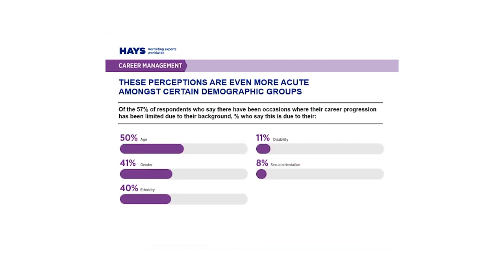57% of respondents who believe that their progression has been limited due to their background cited the following specific characteristics: 50% believe this was due to their age, 41% due to their gender, 40% their ethnicity, 11% their disability, and 8% due to their sexual orientation.